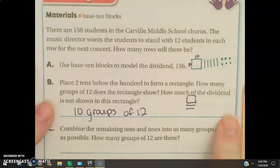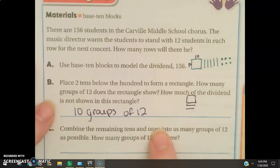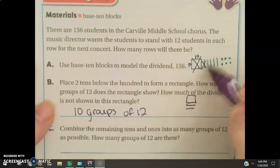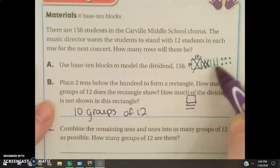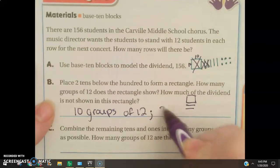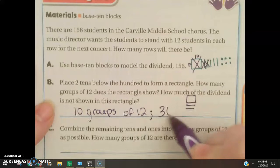And then how much of the dividend is not shown in this rectangle? Well, we have used this, and we've used this. So, now we have 1, 2, 3, so 30, and 1, 2, 3, 4, 5, 6, so 36.